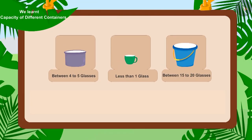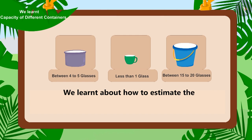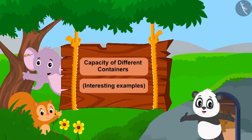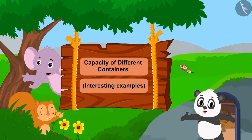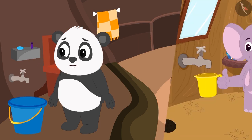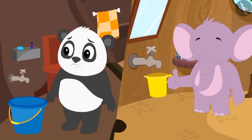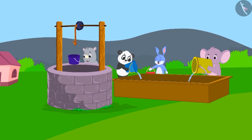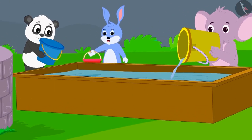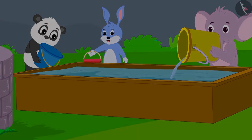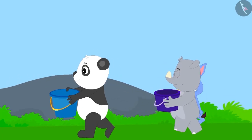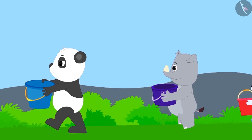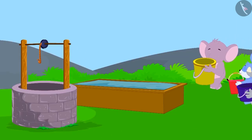Hello children! We learned about how to estimate the capacity of containers. In this video, we will learn more about it through some interesting examples. Suddenly the water stopped coming to the village houses, so all the villagers filled a tank from the village well. The next day, all the villagers took buckets from their homes and reached the tank to get water.